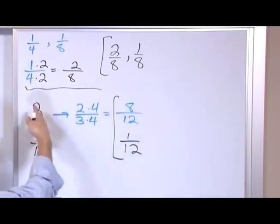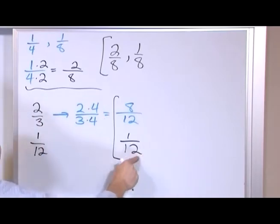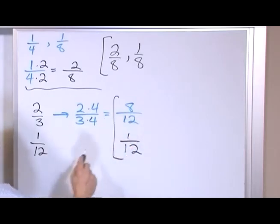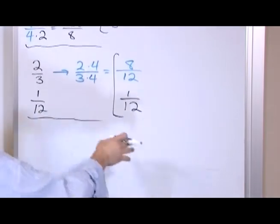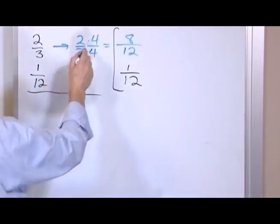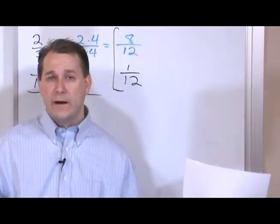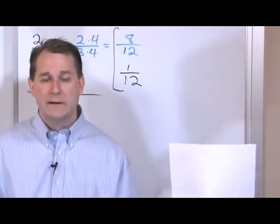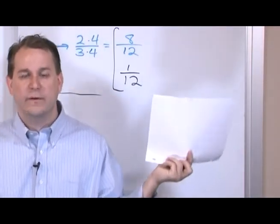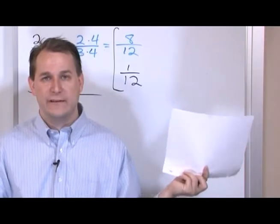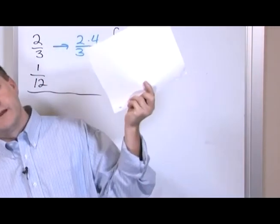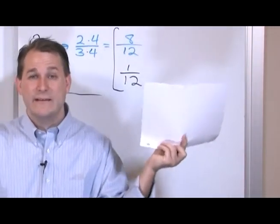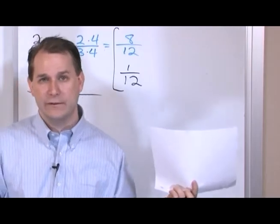I didn't really have to mess with one-twelfth — I left it alone, but I changed two-thirds into eight-twelfths. It represents exactly the same amount of stuff, but now both denominators are the same, and that's going to let me add or subtract them later on. You have complete freedom to multiply anything you want to a fraction as long as you do it to the top and the bottom. You can think of every fraction as a seesaw — everything's balanced. If you multiply something on top, you've got to multiply the bottom by the same number to keep the seesaw balanced.